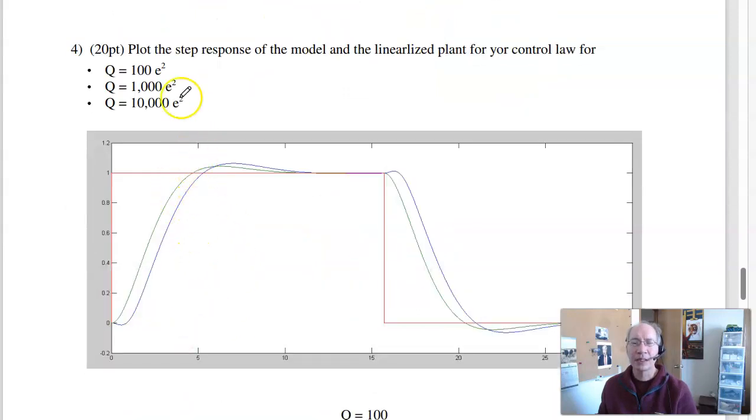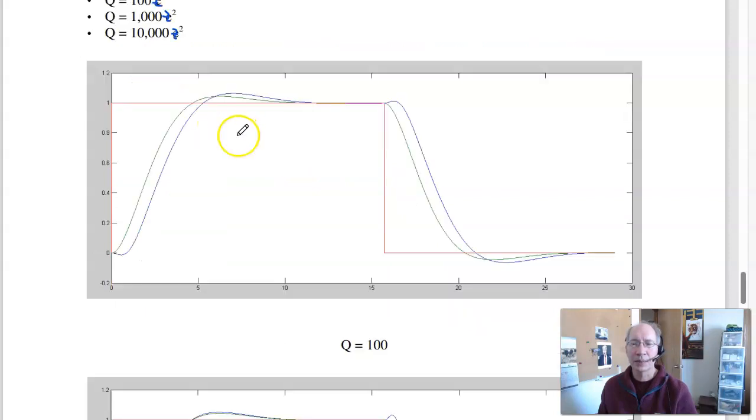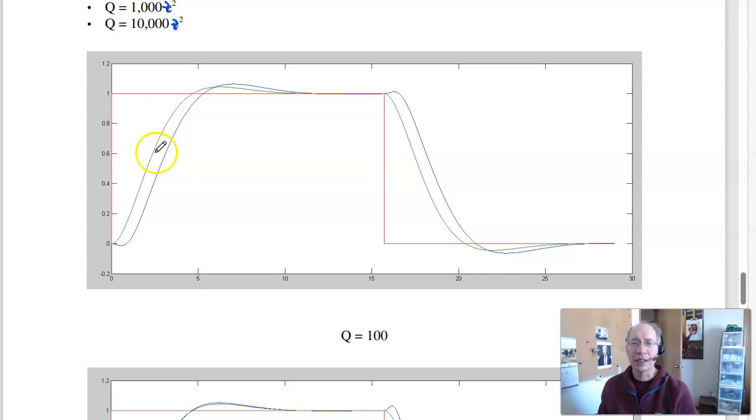If I make Q 100 z squared, 1,000 z squared, 10,000 z squared. At 100 z squared, again, here's the model, here's the plant. It's a fourth order plant, second order model. They're not going to behave the same. I could do better if I changed the reference model, made it also fourth order. Plus the plant has undershoot, again, cart and pendulum to go left, I got to go right, get it to lean, then come over.